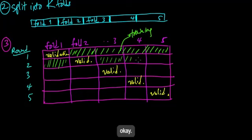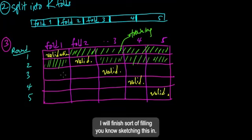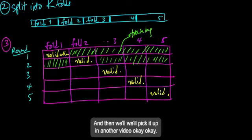For round one, we take fold two, three, four, and five, we lump them all together into one big set. And then we train on that, and then we're going to validate on this. Alright, so I'm out of time in this video. I will finish sketching this in, and then we'll pick it up in another video. Okay, see you soon.